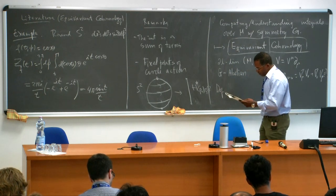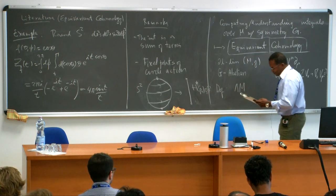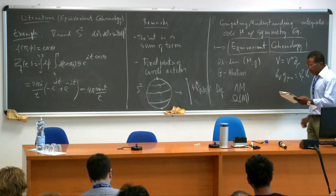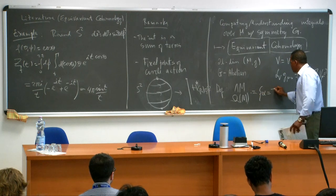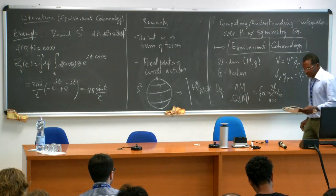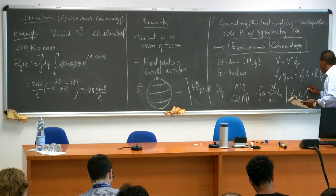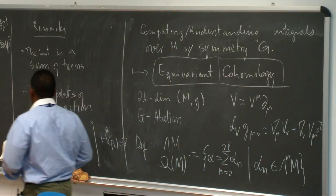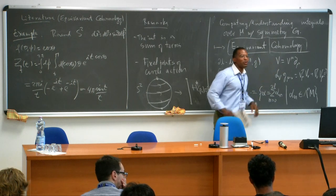Let me introduce a little notation. First definition: the space of polyforms Ω^n(M) is the space of differential forms of degree n. What I do instead of considering some particular form is sum — a polyform is a sum of all forms of degree from 0 to 2L.